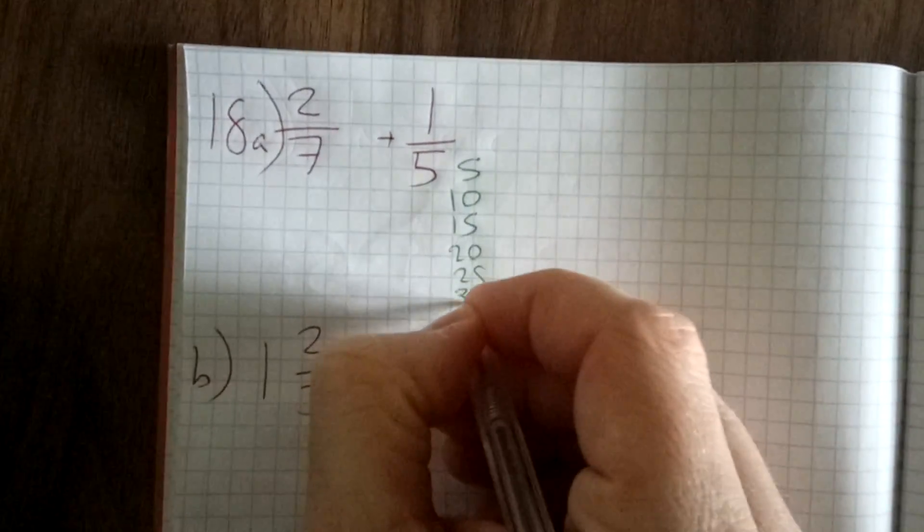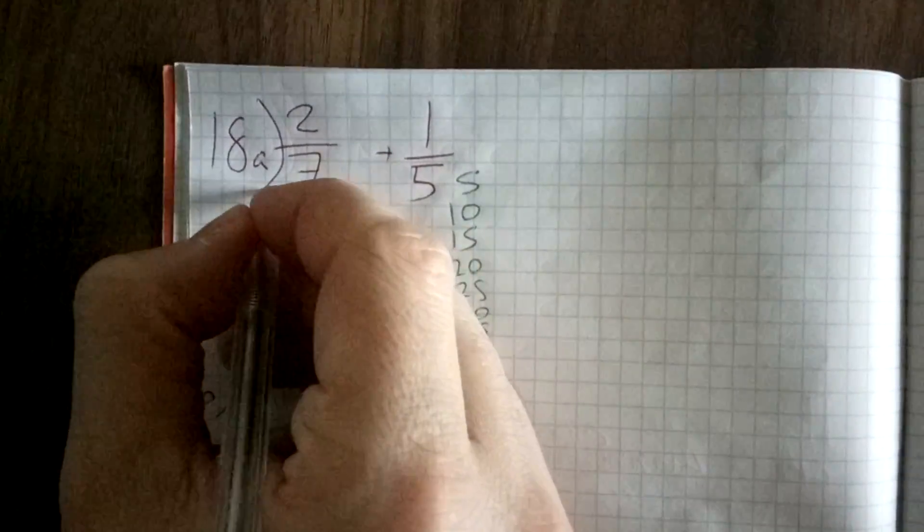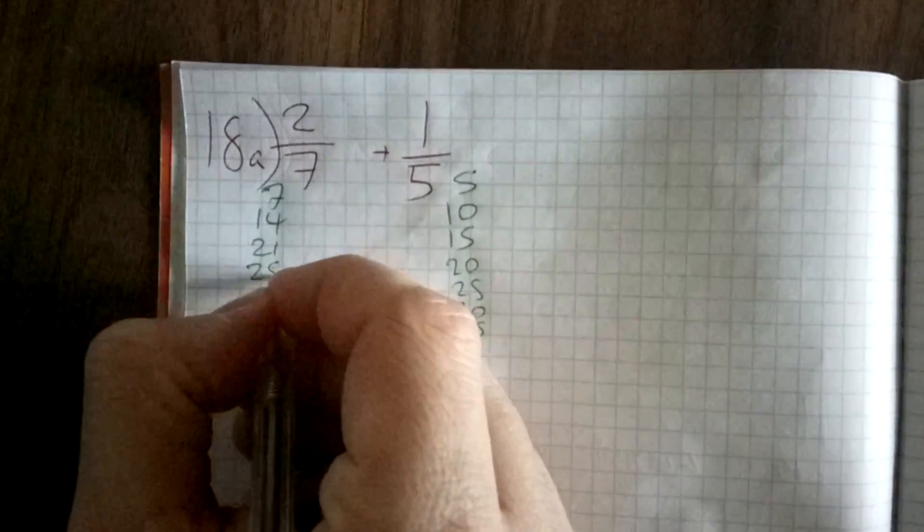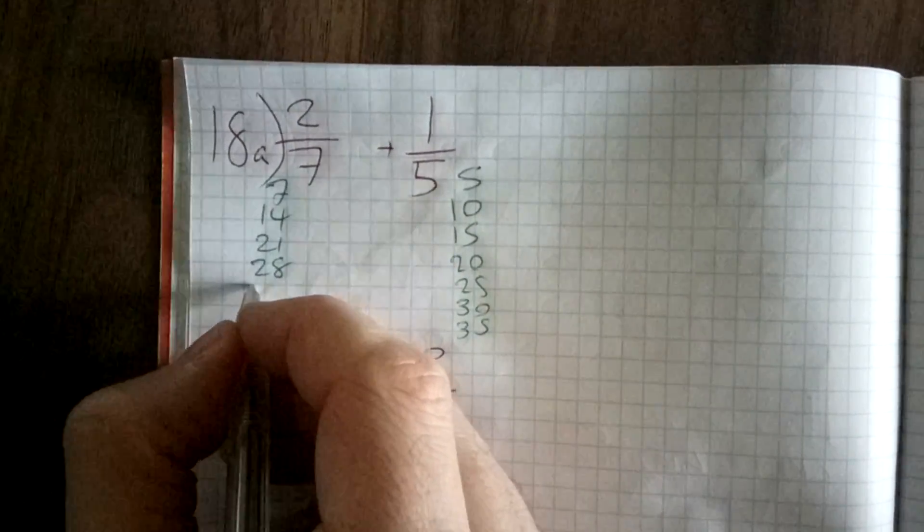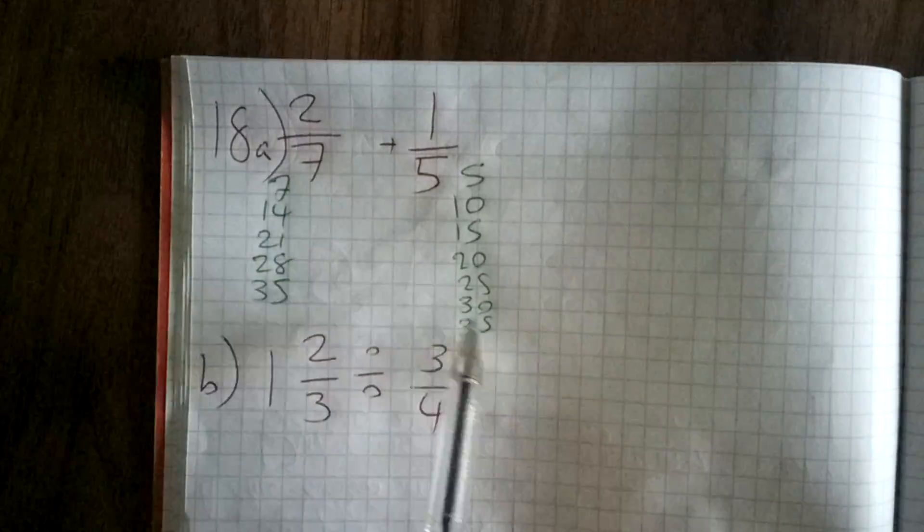Keep going, but I've stopped at 35. For 7, it's 7, 14, 21, 28, 35. 35 is in both, so that's our lowest common multiple.